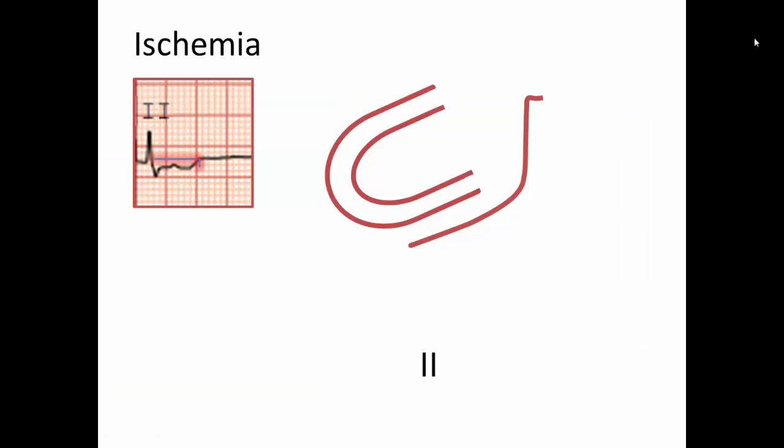Ischemia is defined by ST depression. Ischemia has a time-dependent effect on myocardial cells, lowering membrane potential and shortening action potential duration, thereby changing the voltage gradient between normal and ischemic tissue.